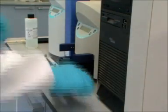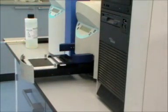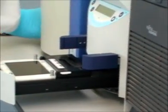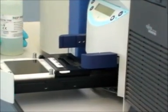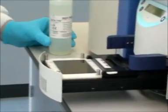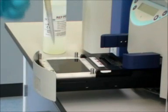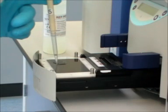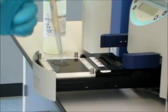The gel tray of the SAS 1 plus electrophoresis unit is then opened and the sample holder placed in position. 400 microlitres of buffer is pipetted onto the heat sink to ensure good contact between the gel and the heat sink.